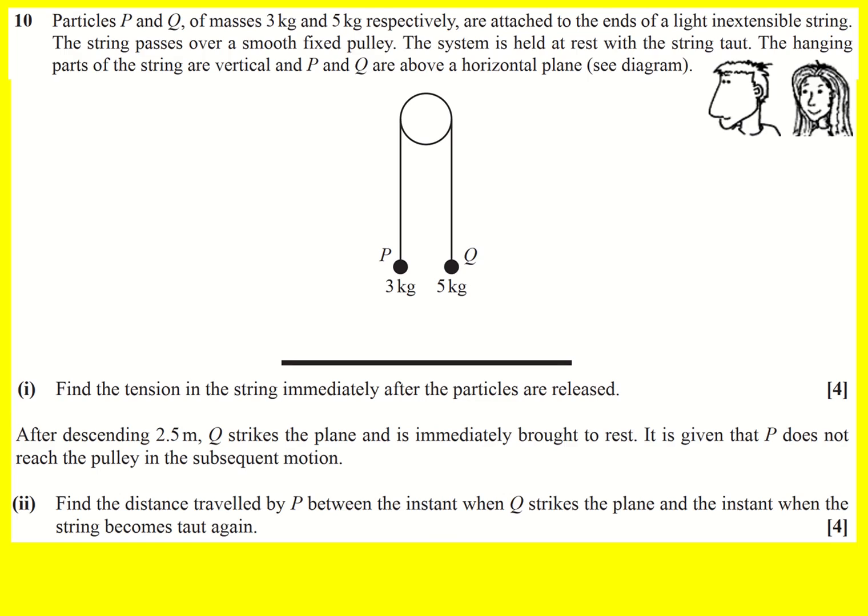We have a connected particles question here, in fact it involves a pulley. So a mass of three kilograms, a mass of five kilograms, they're attached, inextensible string, smooth pulley, normal kind of approximations being made, the system's held at rest with the string taut, hanging parts are vertical, P and Q are above a horizontal plane here.